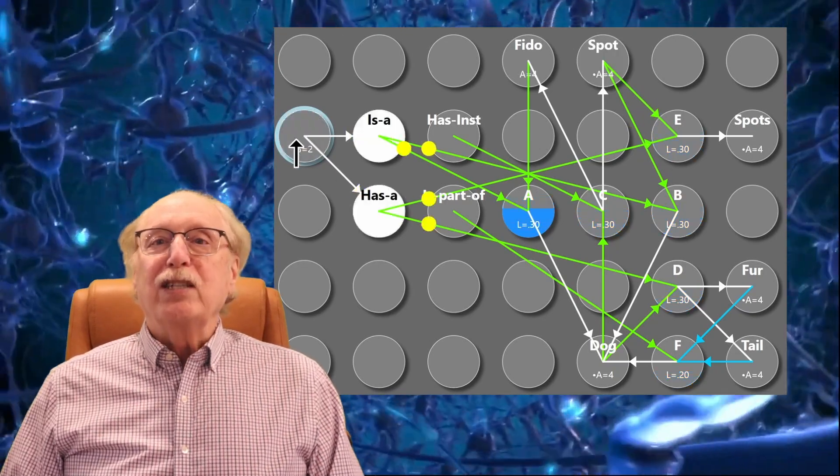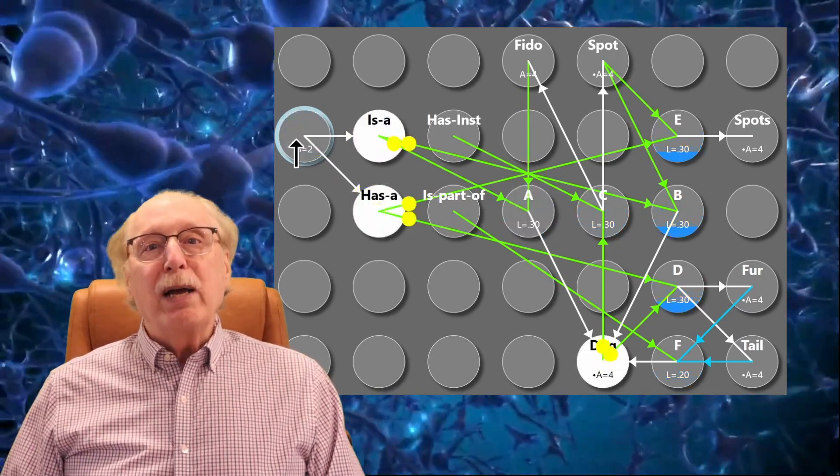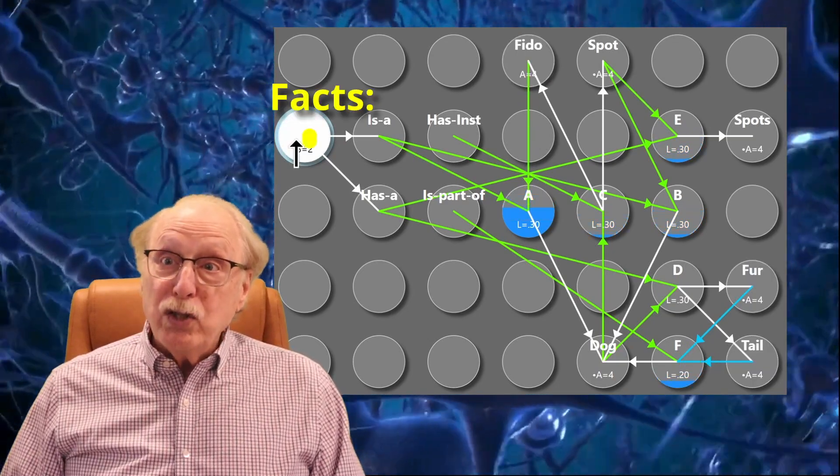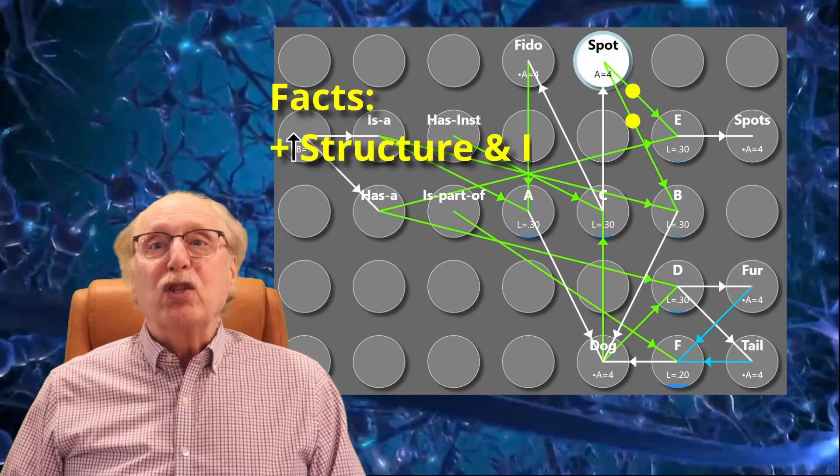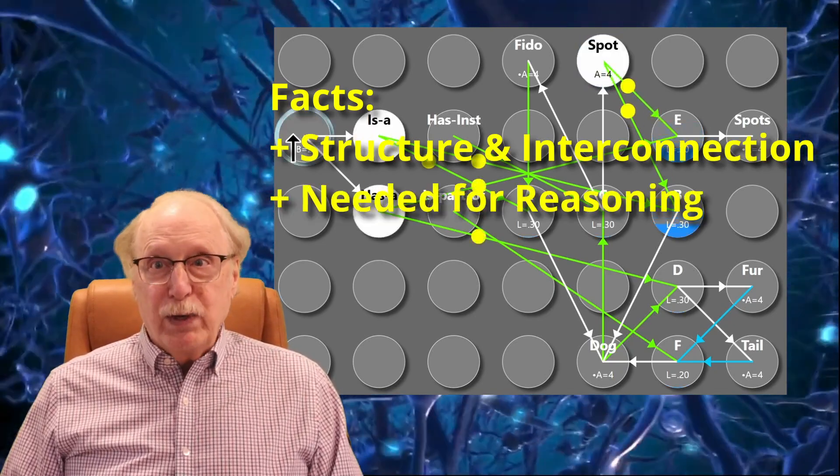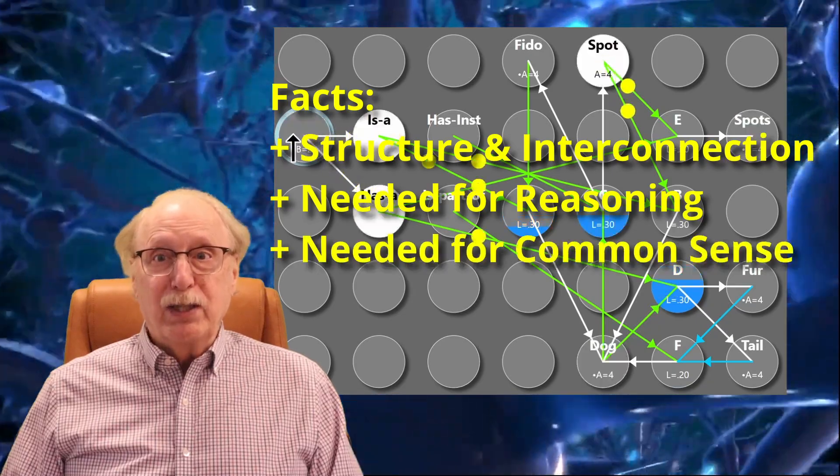In this video, we'll take the next leap. I'll show you how a biologically plausible network of neurons could represent not just isolated facts, but structured, interconnected knowledge, the foundation for reasoning, memory, and common sense.